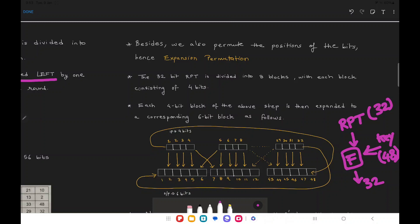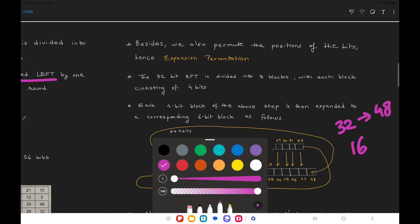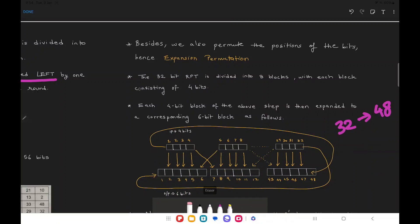What we are going to do is increase the size of this RPT from 32 to 48 bits. For that, we have to make some additions to those 32 bits. If we want to convert a 32-bit value to a 48-bit value, we need to add 16 more bits. These bits are not added randomly; we have to follow a certain algorithm, which is depicted as the diagram in front of you.